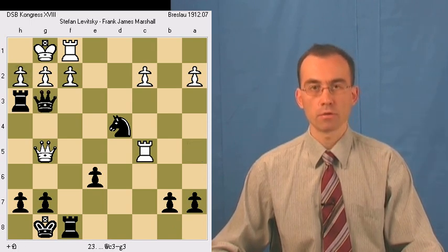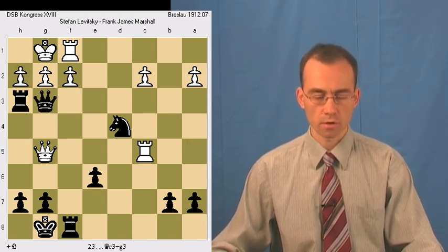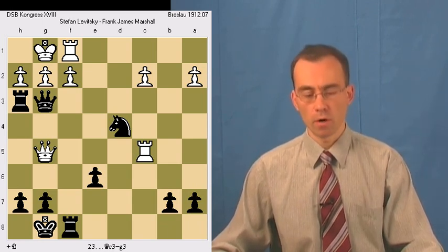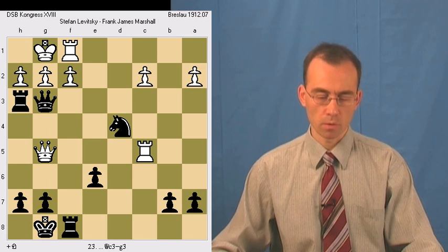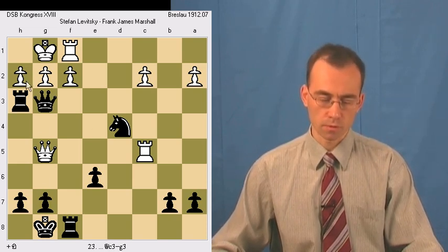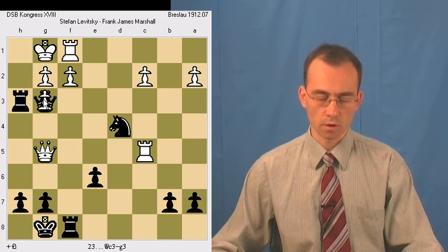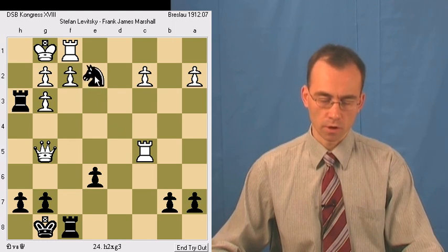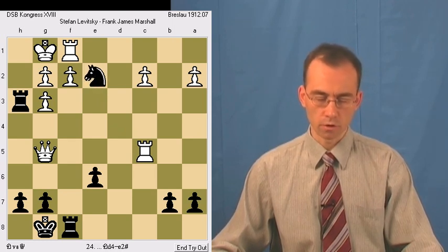So white has to eliminate black's queen, and there are three ways to eliminate black's queen. Let's consider first possibility, pawn takes queen, but then knight e2 mate.